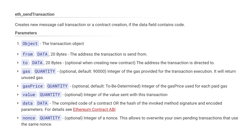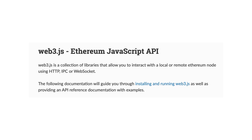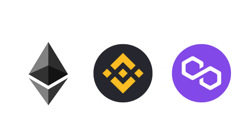The API of Ethereum is complicated. To interact with a smart contract, you have to use a couple of hexadecimal parameters and it's very confusing. In this video, I will give you a quick intro to Web3.js, a library that makes it super easy to use the Ethereum API and interact with smart contracts.